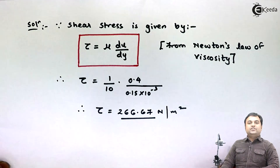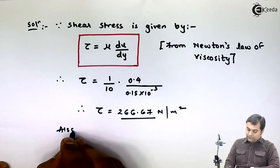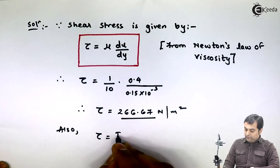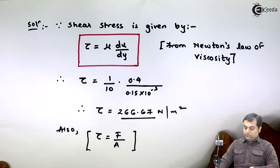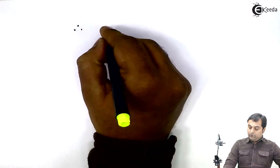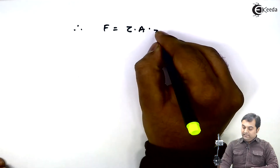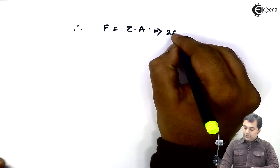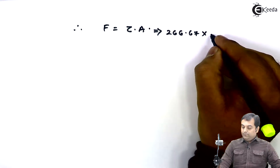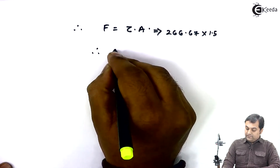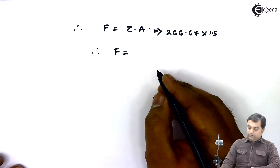Now once we have shear stress, we can easily get the force. Shear stress = force / area, therefore force = shear stress × area = 266.67 × 1.5 = 400 newton. This is the first answer.